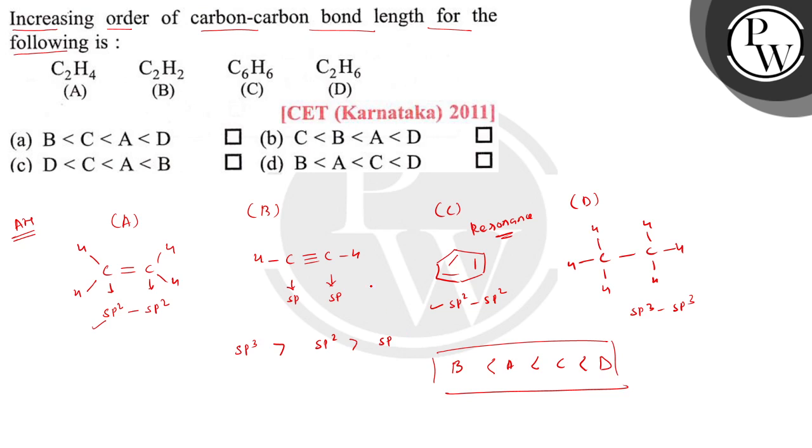So this is the strength of bond length in these following compounds, and this is correctly mentioned in option D. So option D is correct. I hope you understood. Wish you best of luck.